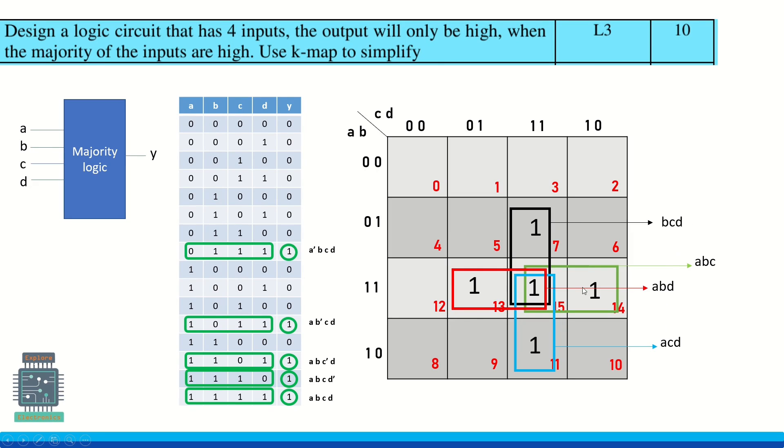Now these four are the expressions corresponding to the groups what we have made. We need to write the final expression for this as: y is equal to b c d plus a b c plus a b d plus a c d. This is the final expression.